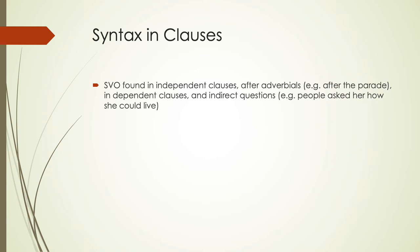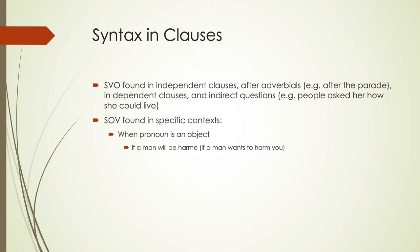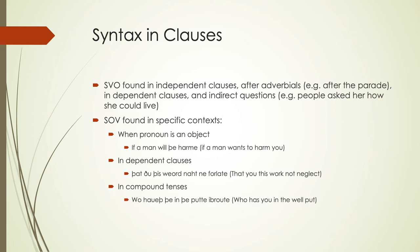SVO constructions are found in independent clauses, after adverbials, and in dependent clauses and indirect questions, like 'people asked her how she could live.' Subject-object-verb ordering is still found when a pronoun is the object — 'if a man will you harm' — and in independent clauses like 'that you this work not in neglect.' In some compound tenses we also see this, such as 'who has you in the well put' instead of 'who has put you in the well.'